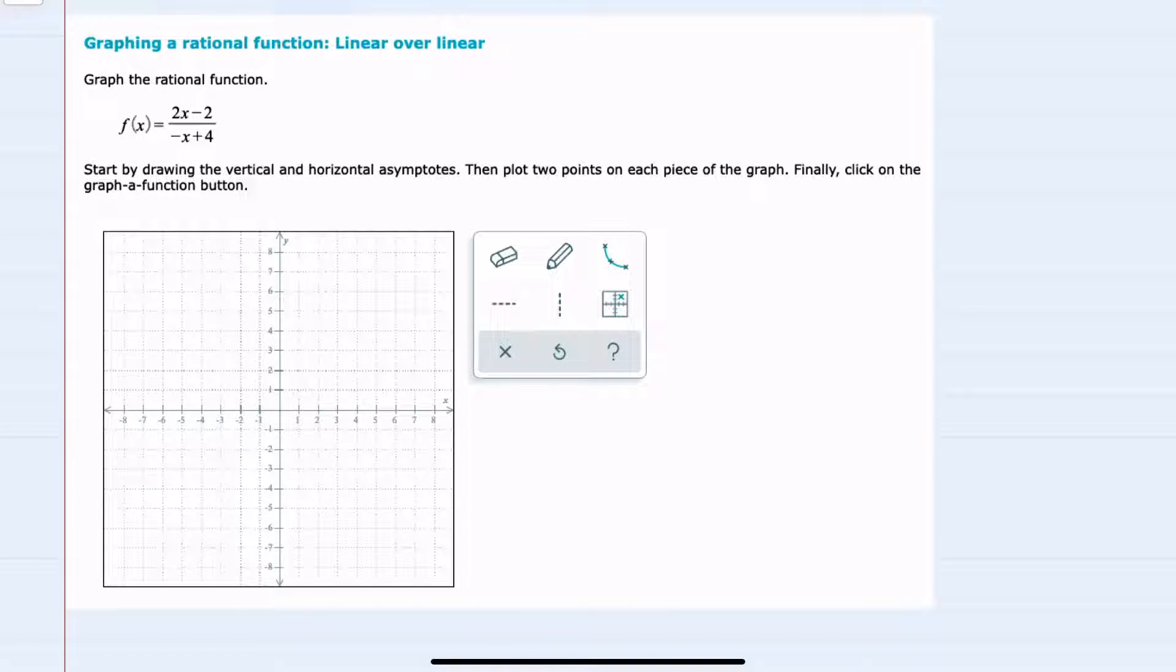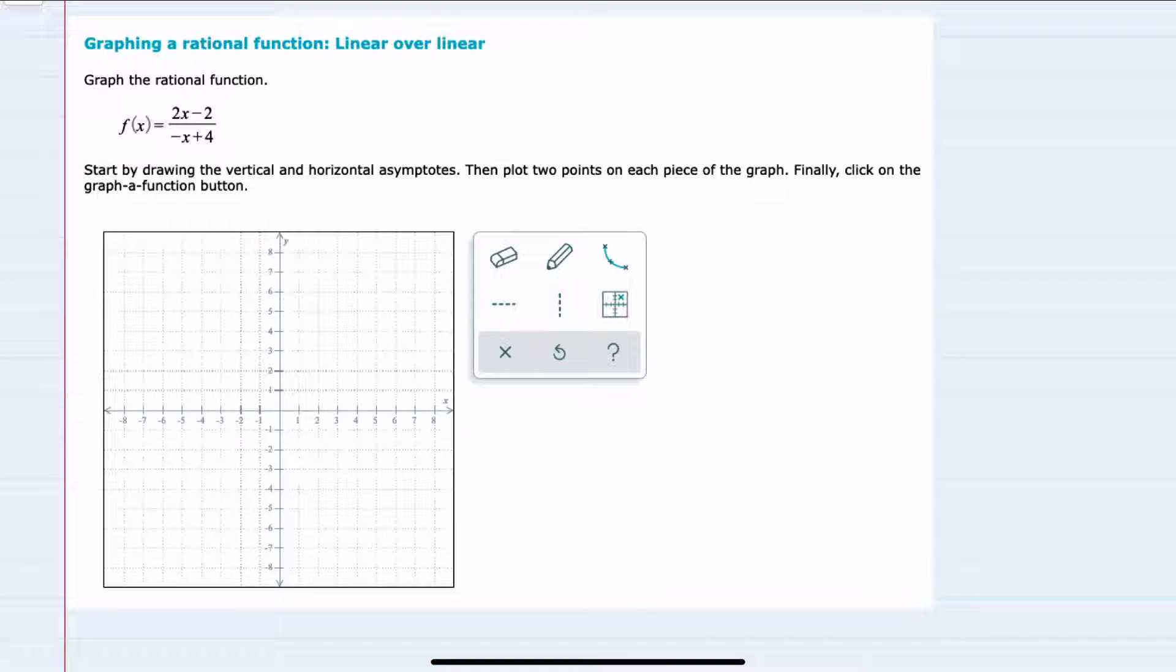In this video, I'll be helping you with the ALEKS problem type called graphing a rational function linear over linear. We're given the function f(x). In the numerator, we have the linear function 2x minus 2, and in the denominator, the linear function negative x plus 4. So linear over linear.